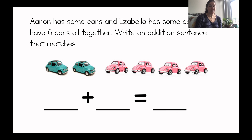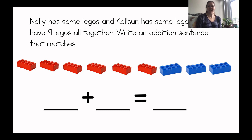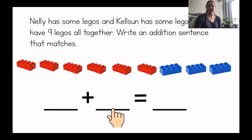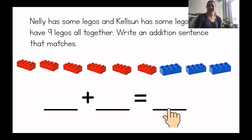Okay, I'm going to give you your second problem to solve now. Here's the second one. This says, Nellie has some Legos and Kelson has some Legos. They have nine Legos all together. Write an addition sentence that matches. So you're going to count by yourself those red Legos that Nellie has and write the number where I'm pointing. And then plus the blue Legos that Kelson has — write the number. And then what does it equal? How many are there all together? You're going to count all of the Legos and write the number there. All right, go get started.